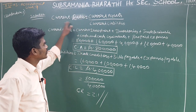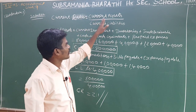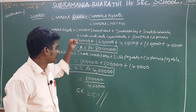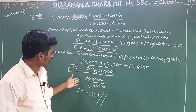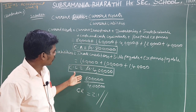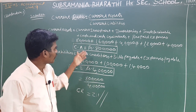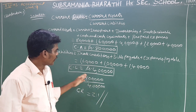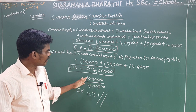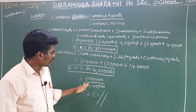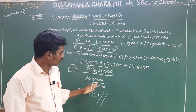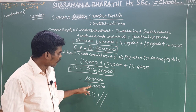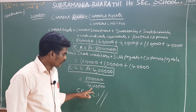Current ratio equals current assets divided by current liabilities. Current assets is 8,00,000 and current liabilities is 4,00,000. So 8,00,000 divided by 4,00,000 equals 2. The current ratio is 2:1.